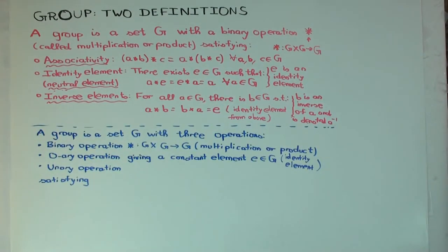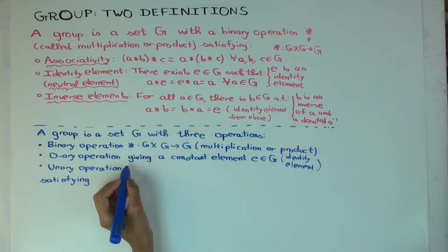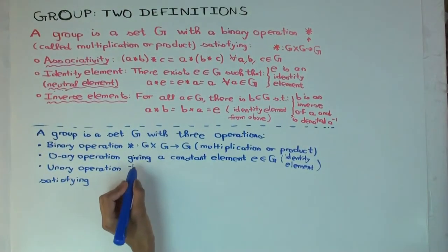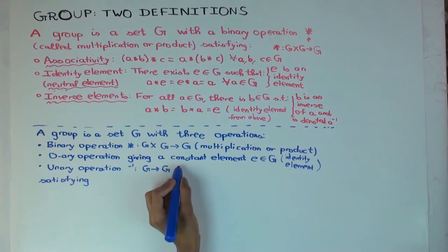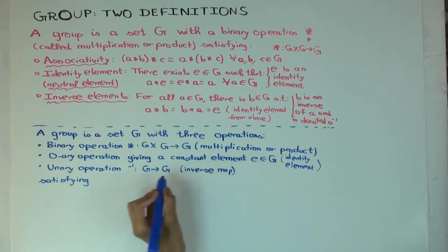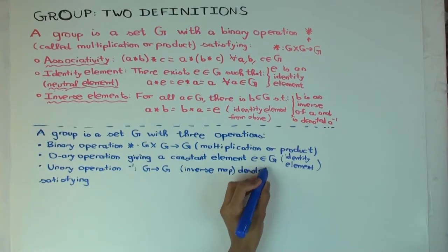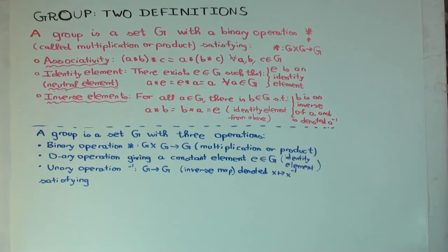The unary operation takes one input and gives one output. This is trying to model the inverse. So the unary operation is called the inverse map, and it's denoted by x superscript minus one.